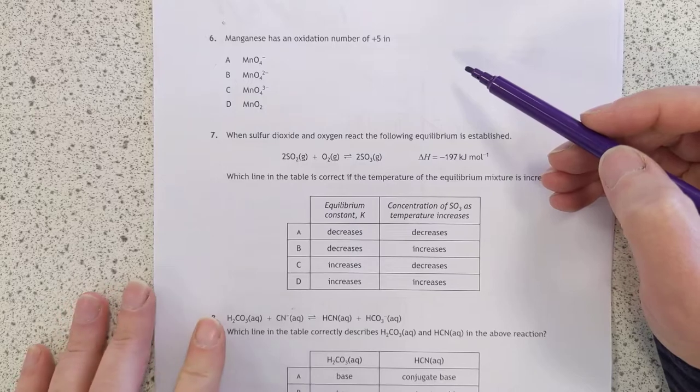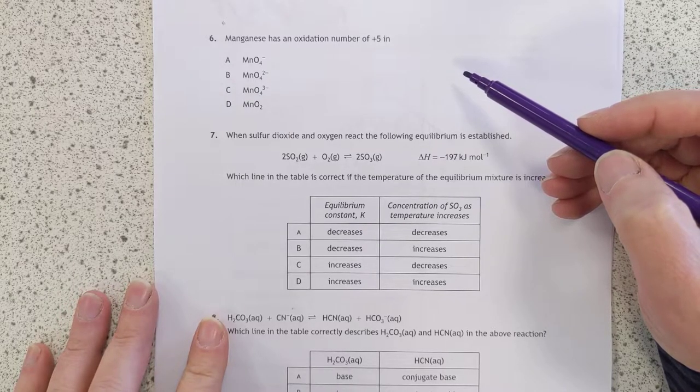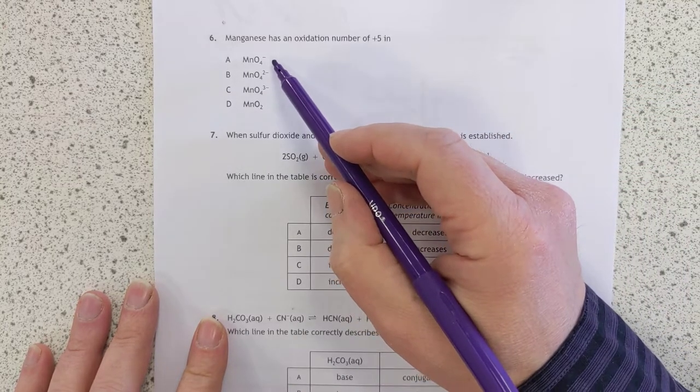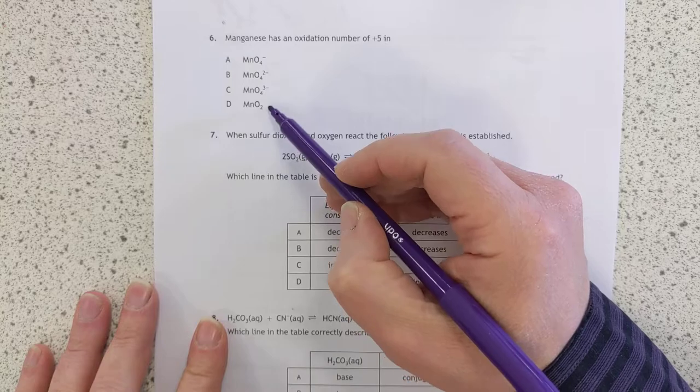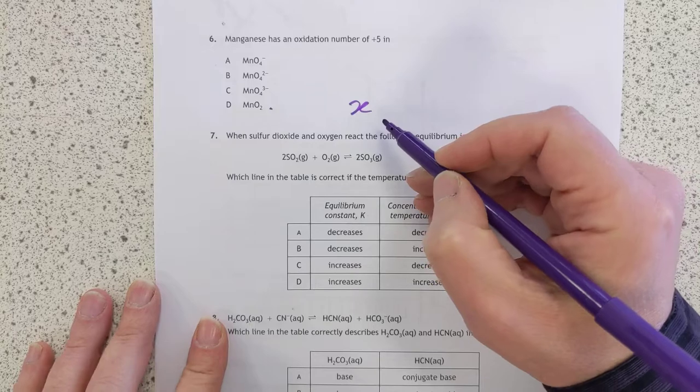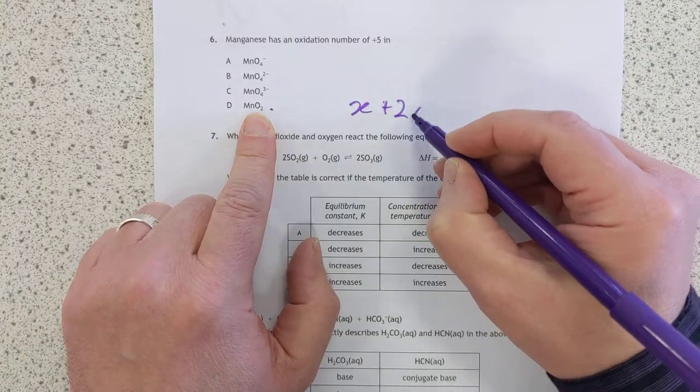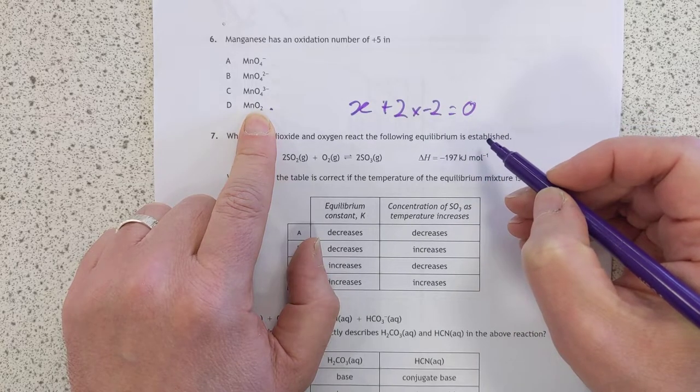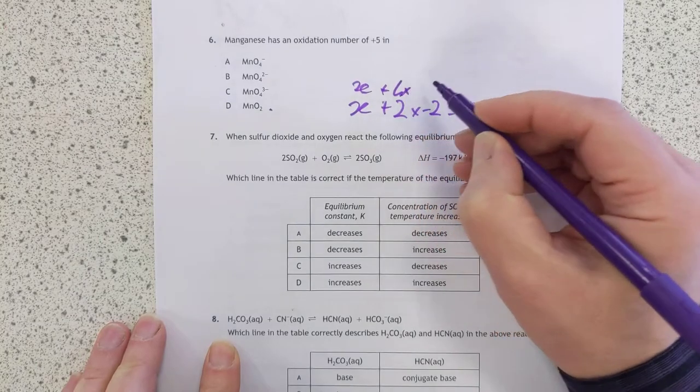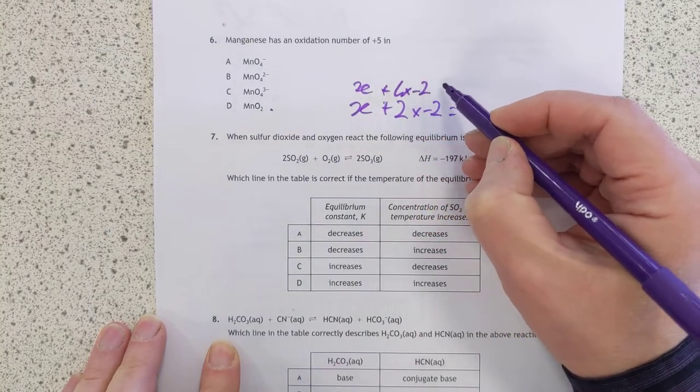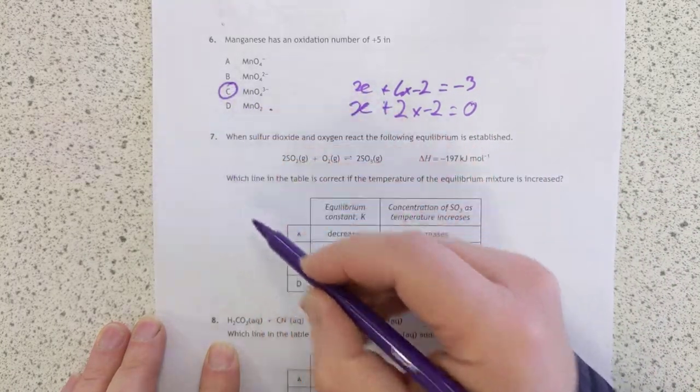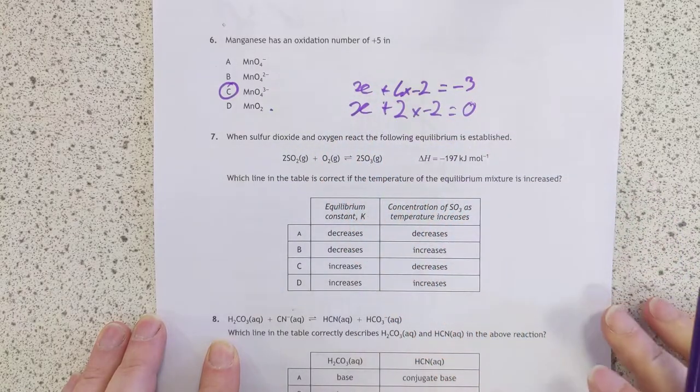Number six, manganese has an oxidation number five in. I hate these donkey work questions. The only shortcut that I know is that I remember that manganese is seven and permanganate. So I'm going to start with this one and work backwards. X is the charge of manganese. Oxygen is two negative two. That total comes to zero. So that's not going to be it. X plus four lots of negative two comes to negative three. That becomes negative eight becomes plus eight. Oh, that looks like the answer there. There we go. If it was my exam, I'd go back and just double check the other ones.